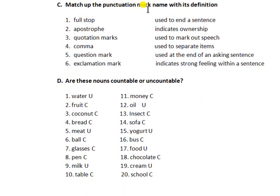Match the punctuation mark name with its definition. Full stop: used to end a sentence. Apostrophe: indicates ownership. Question mark: used for asking a question. Quotation mark: used to mark out speech — when we have to use exact words. Comma: used to separate items in a sentence.